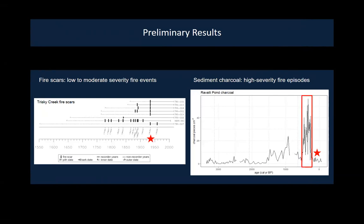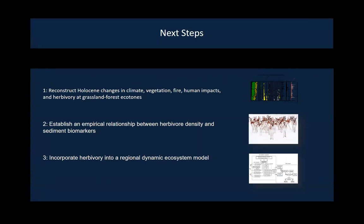It's interesting to compare those two proxies and interpret more of what the charcoal record is saying based on the fire scars. Of particular interest is the period from about 550 to 250 years ago, corresponding roughly to the Little Ice Age — thought to be a cooler, wetter period. That suggests there was a lot of severe fire really close to our site, and we're curious to parse out whether that's a climate signal alone or if humans were involved in that burning.